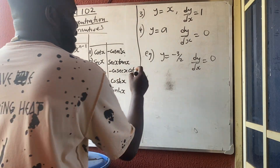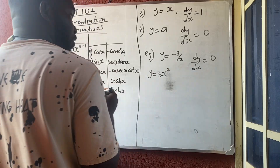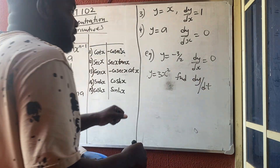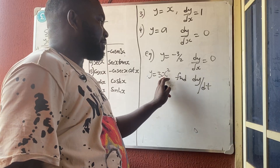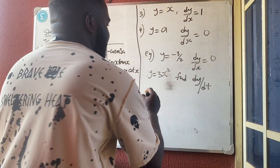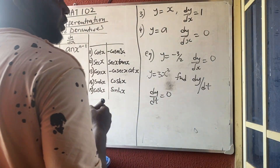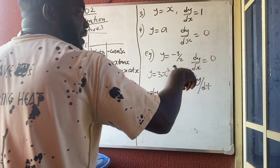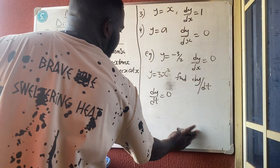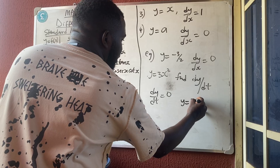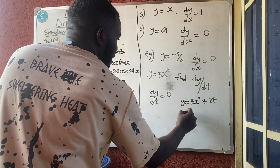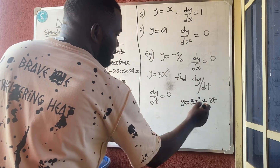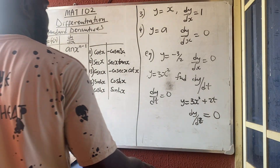Be careful: if y = 3x² and you are asked to find dy/dt, then the independent variable is t, not x. Since there is no t in the expression, everything is a constant with respect to t, so dy/dt = 0. Similarly, if y = 3x² + 2t and you find dy/dz, everything is a constant w.r.t. z, so dy/dz = 0.